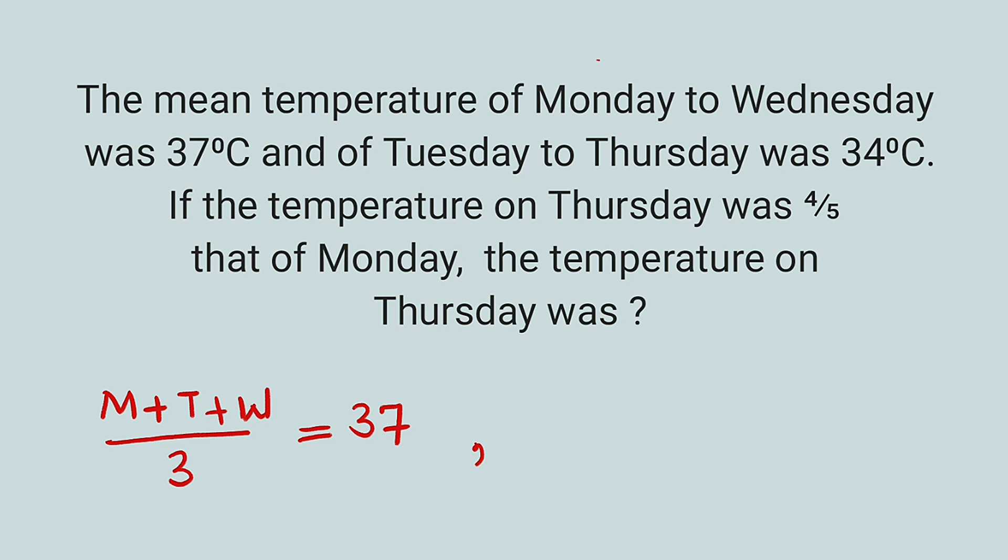Then the other one, we have seen that from Tuesday to Thursday, which also have three days: Tuesday, Wednesday, and Thursday, the mean temperature was 34 degrees Celsius. So we have T for Tuesday plus W for Wednesday plus TH for Thursday, also divide by three. This is equal to 34.